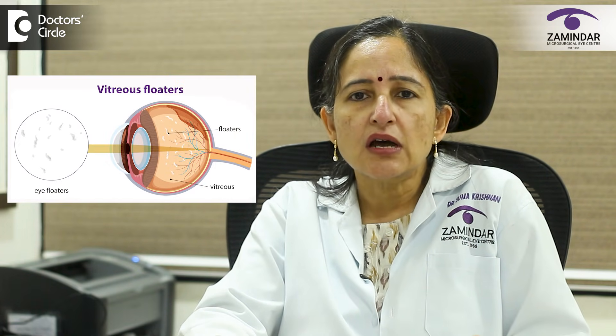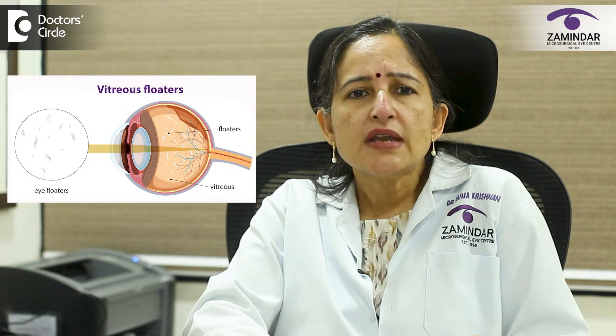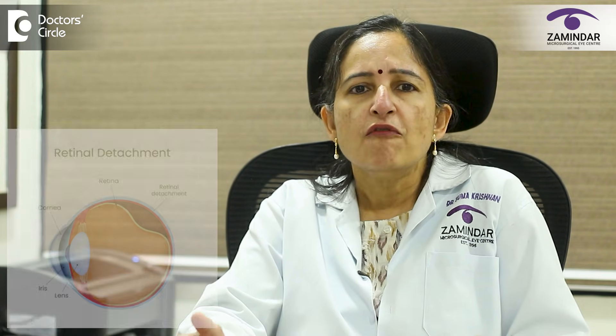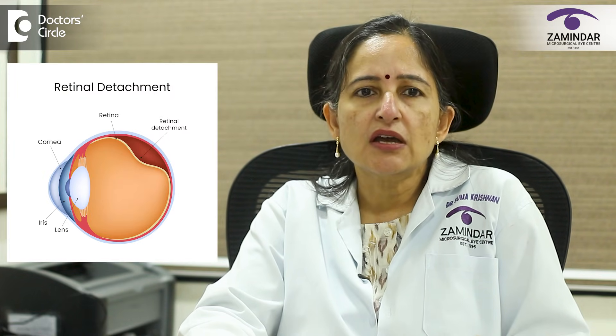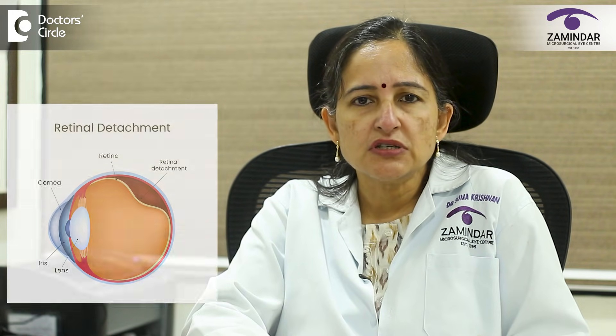When and why do they appear? Most floaters are harmless and simply a part of the aging process. As we age, the vitreous gel becomes more watery and can clump together. These clumps cast tiny shadows on the retina which you see as floaters. The next common cause for floaters is a posterior vitreous detachment or PVD. This is a normal physiological process where the vitreous separates from the retina with age, and is commonly seen after the age of 50 years.